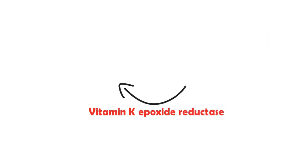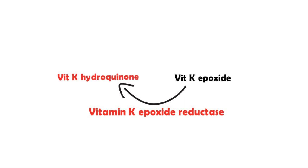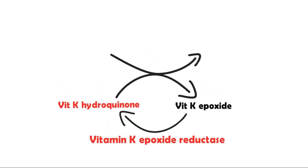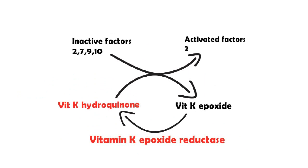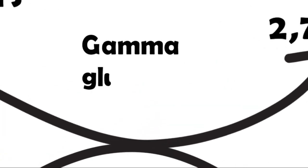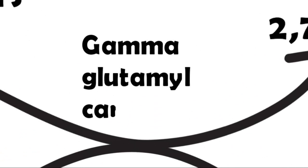This enzyme is helpful in the conversion of vitamin K epoxide to another form called vitamin K hydroquinone. Vitamin K hydroquinone is in turn helpful in the conversion of inactivated forms of the vitamin K dependent clotting factors — namely 2, 7, 9, and 10 — to activated forms of clotting factors 2, 7, 9, and 10. This process actually takes place with the help of an enzyme called gamma glutamyl carboxylase.